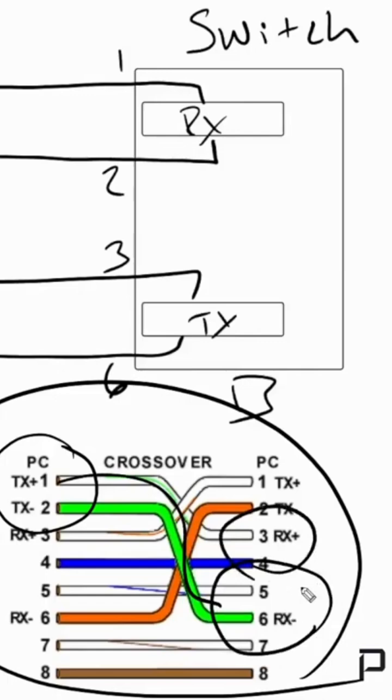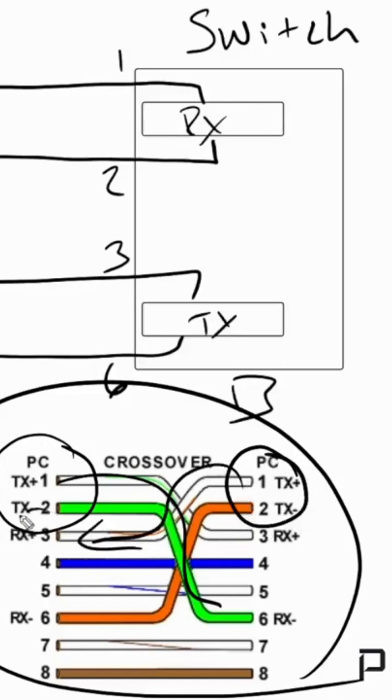That's also the same on the opposite side of the cable where we have the one and two on this device crossing over to three and six on the other side. This is how you would connect two like devices together in order for them to communicate.